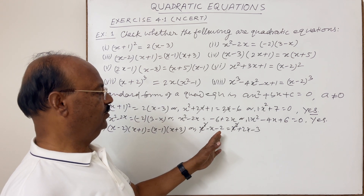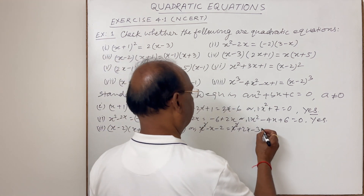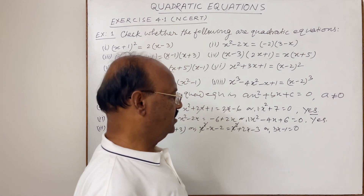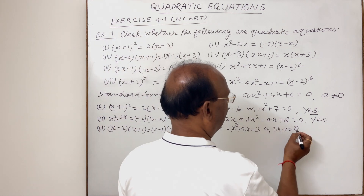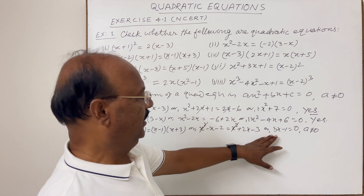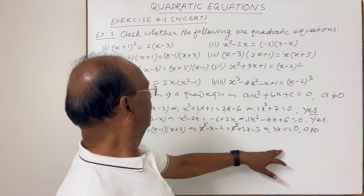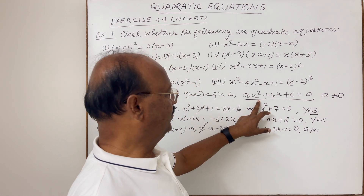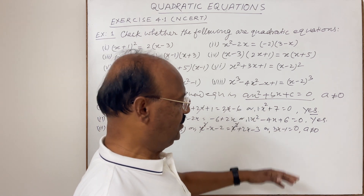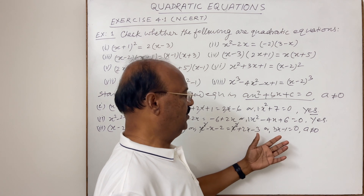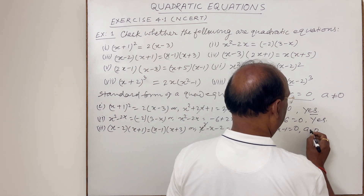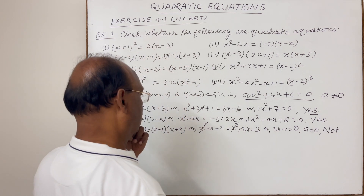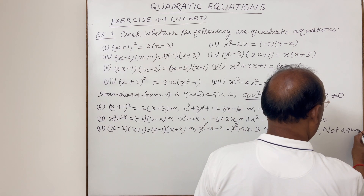After cancelling x² and transposing, we get 3x − 1 = 0. There is no x² term, so when compared with the standard form ax² + bx + c = 0, the coefficient a = 0. Since a = 0, this is not a quadratic equation.